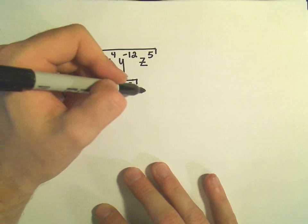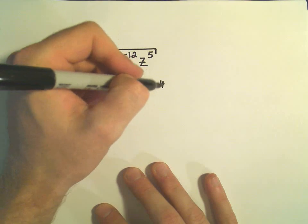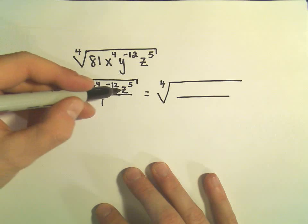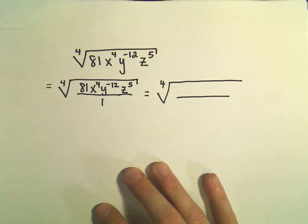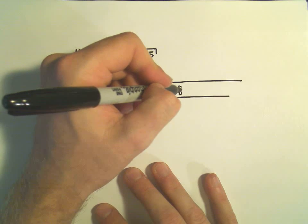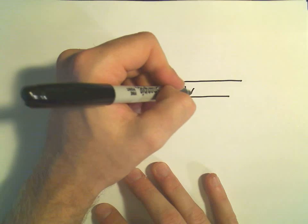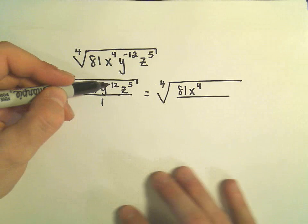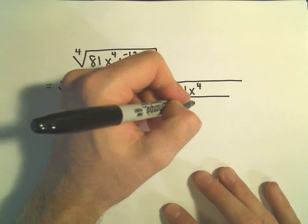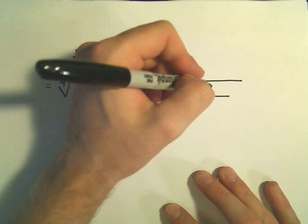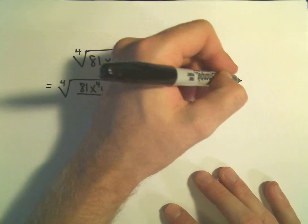Recall if you have a fraction like we do underneath the radical, if everything's being multiplied in the numerator and the denominator, you're free to move factors around. So 81, I'm going to leave that on top. X to the fourth, I'm going to leave that in the numerator. The y to the negative twelve, I can put that in the denominator and make it y to the positive twelfth power. And my z to the fifth, I'm just going to leave that alone.